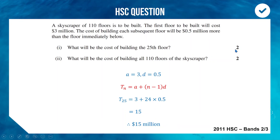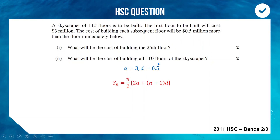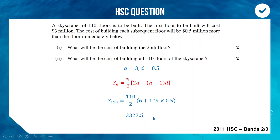Part ii: what is the total cost of building all 110 floors? We're summing 110 terms with a = 3 and d = 0.5. Using the sum formula with n = 110 and n − 1 = 109, we get 3327.5 (in millions). Multiplying by one million, the total cost is $3,327,500,000 to build the 110-floor skyscraper.